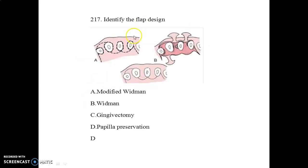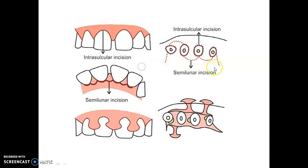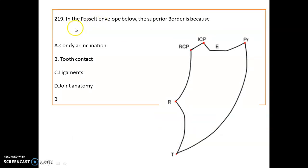Identify the flap design. This flap design indicates the papilla preservation flap. First you can see the intracrevicular incision, then the semilunar incision, and the flap is reflected preserving the papilla — this is the papilla preservation flap.